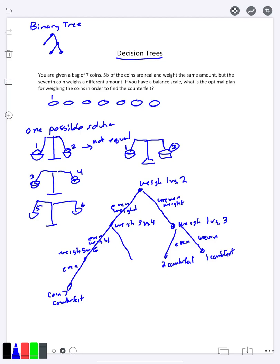When I weighed three and four, if they were uneven, that means either three or four is counterfeit. So I will weigh one versus three. If they are even and I knew either three or four was counterfeit, that means four is counterfeit. I could keep doing this, but it's getting pretty messy here.